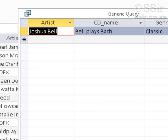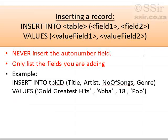The other values are empty, so we can do queries with the NULL condition to check which fields have a null value. Note this field: never insert an auto-number field — that will mess it up. Only list the fields that you are adding values for, which is what we've done now.